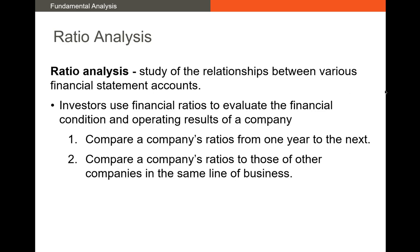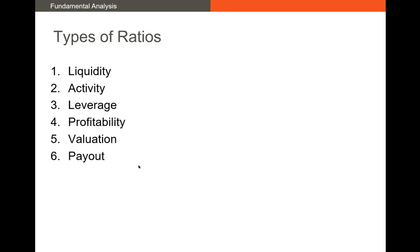We take data from these financial statements and other sources to perform ratio analysis — looking at relationships between different financial statement accounts through scaled values or ratios. There are two ways we typically do this: we can compare a company's ratios from one period to the next in time trend analysis, or compare our company's ratios to direct competitors in peer group analysis. Ratios break out into about six areas: liquidity, efficiency or activity, leverage, profitability, valuation, and payout.